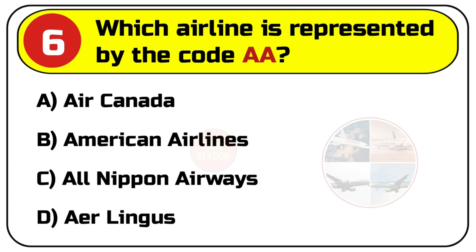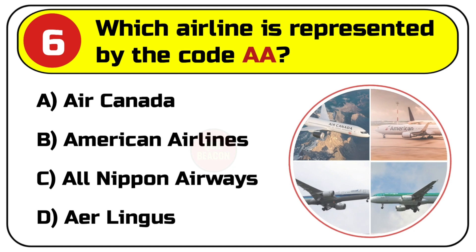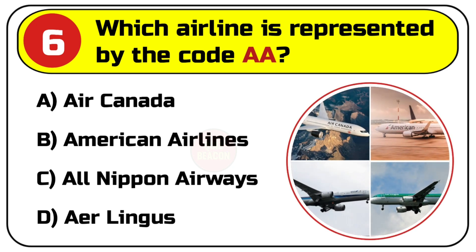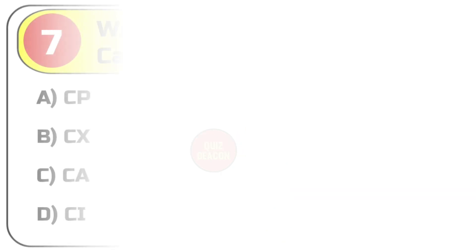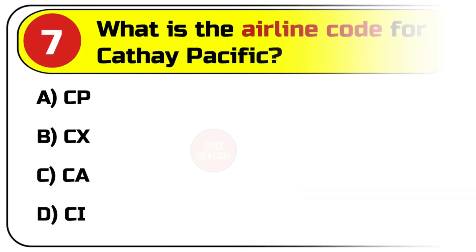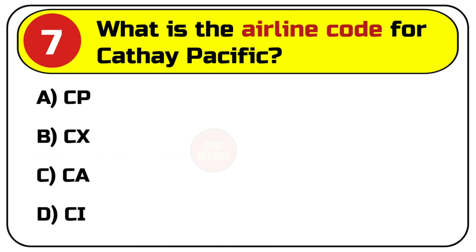Question number six: which airline is represented by the code AA? Options are A. Air Canada, B. American Airlines, C. All Nippon Airways, D. Air Lingus. Correct answer is B. American Airlines.